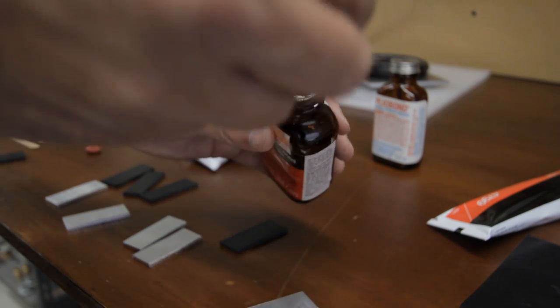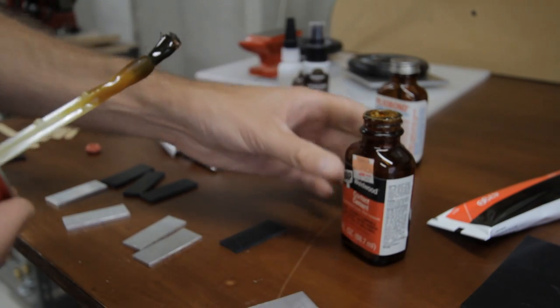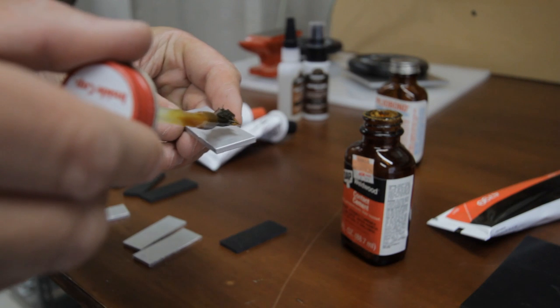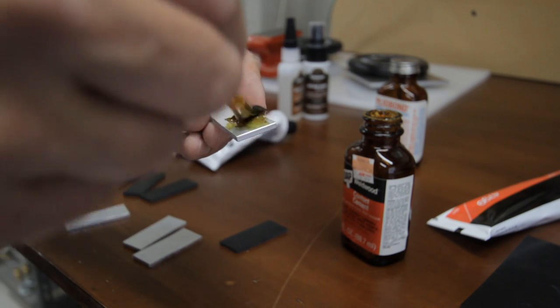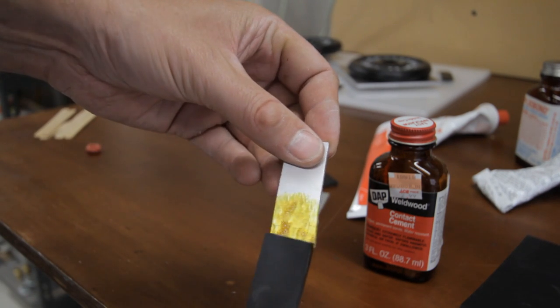Contact cement has been around forever, but I think many people overlook it, which is a shame because it's a fantastic glue. Apply a little bit to both surfaces, let them get dry and tacky, and then join them.